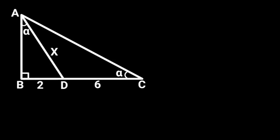This figure is a right angle triangle ABC with a line segment AD. Angle BAD, which is given as alpha, is equal to angle ACB. If AD is equal to X, BD is equal to 2 units, and DC is equal to 6 units, find the value of X.